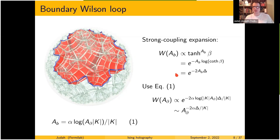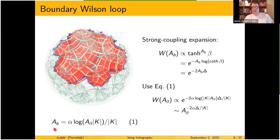Each activated plaquette on the inside gives a factor of tanh beta, so the Wilson loop is exponential in the bulk surface area. Using the continuum relation, the boundary area is exponentially larger than the bulk area — the bulk area is logarithmic in the boundary area. Substituting this relation, you can see the Wilson loop is expected to exhibit power law behavior in the boundary area.